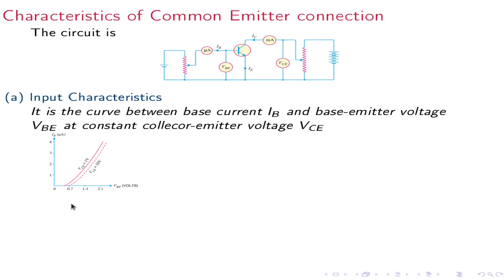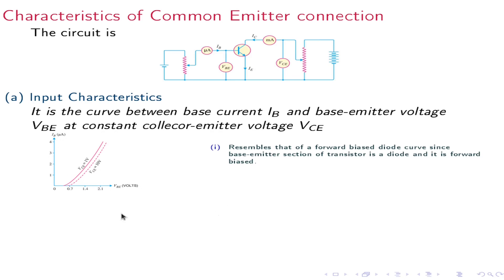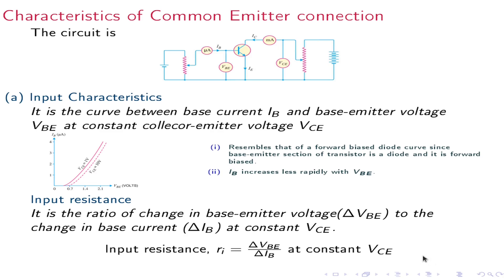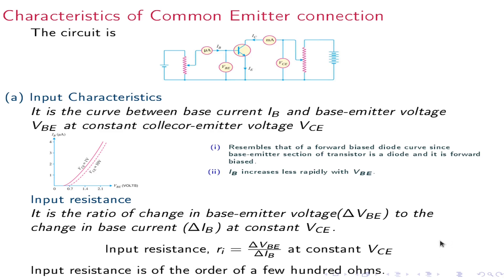The input characteristic of the common emitter is the curve between Ib and Vbe. It is almost similar to that of a forward-biased diode, because the emitter-base junction of the transistor is forward biased. Ib increases rapidly with Vbe. The input resistance Ri equals delta Vbe divided by delta Ib at constant Vce. Its value is of the order of a few hundred ohms.